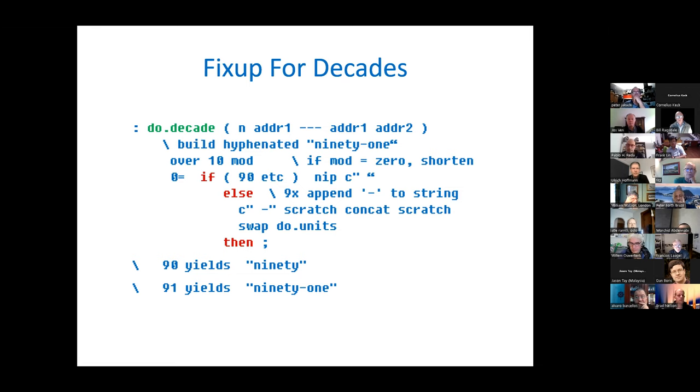Now we are looking at the decades, the higher decades, like in the 20s, 30s, 40s, and 50s. We have to allow for this quirk that, for example, we're building a hyphenated number like 91. So we say ninety, and then append to it one. But if it's an even 90, then we just use the word ninety itself. So that's a little if-then-else that handles the detection of an even decade. We see that 90 yields ninety, 91 yields the text string ninety-one.